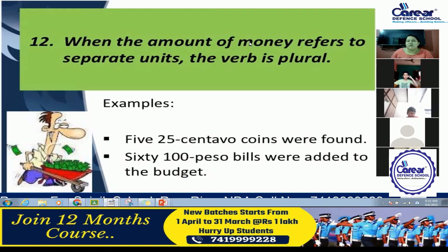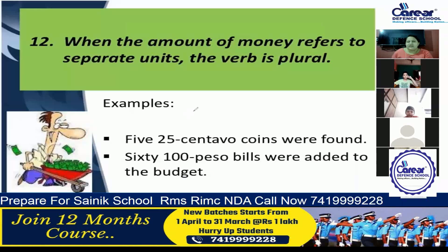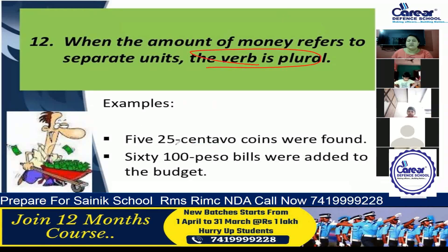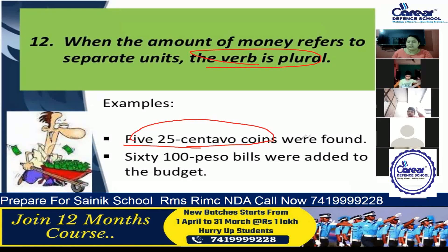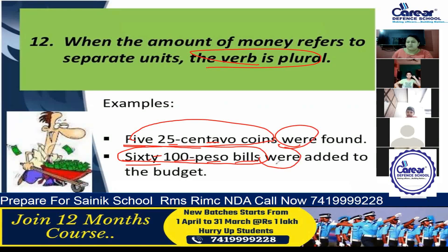Rule number twelve: when an amount of money refers to separate units — broken down individually, like cents — then we use a plural helping verb. For example, twenty-five cents being referred to as separate individual units would take a plural helping verb, because each unit is being mentioned separately rather than as a total amount.